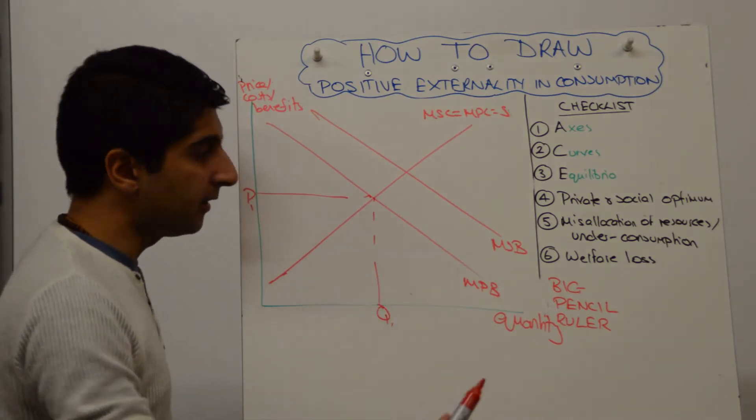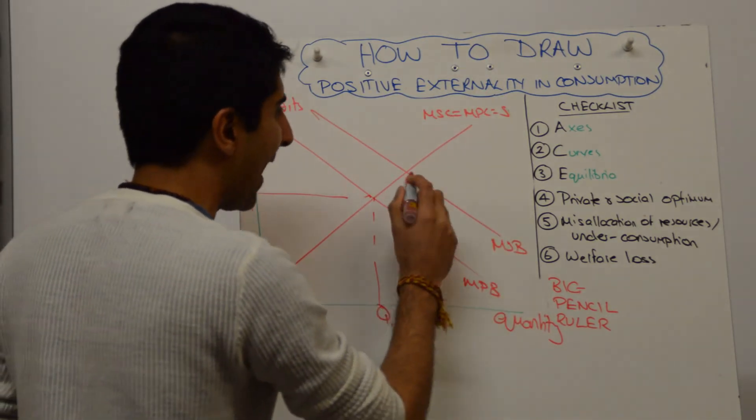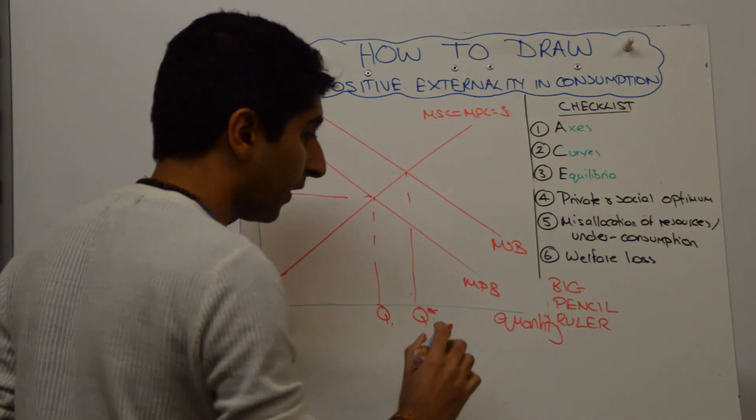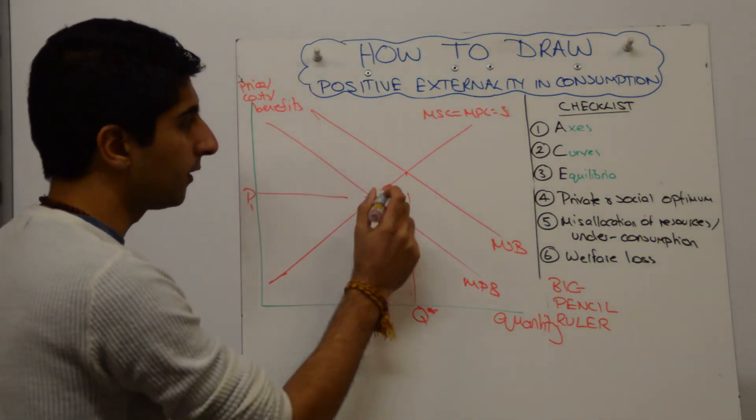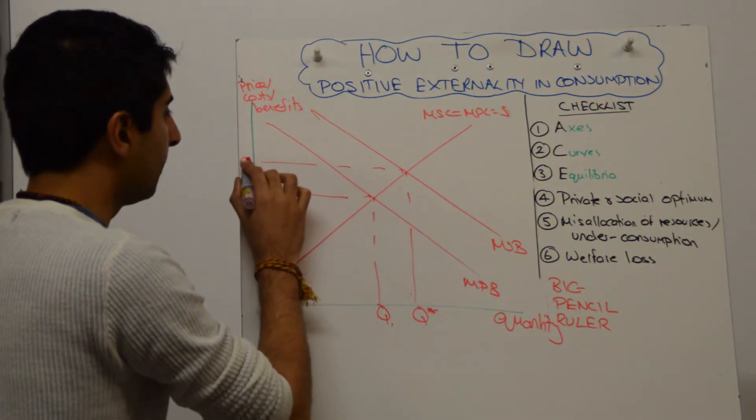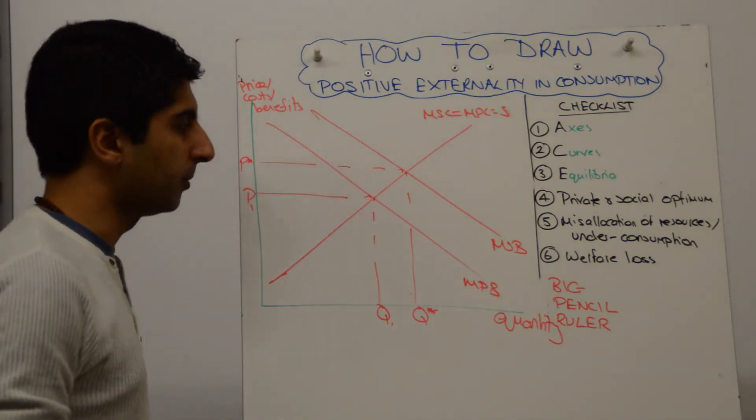Your social optimum means labeling where MSB is equal to MSC. Show the examiner you know that's a different equilibrium, and that's showing you something different. Label it with a star, so Q star and P star, indicating the social optimum here.